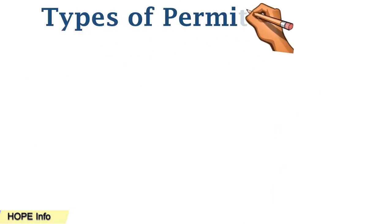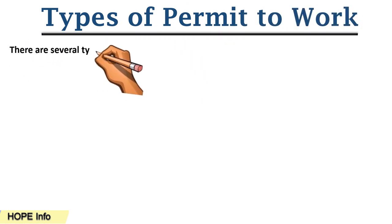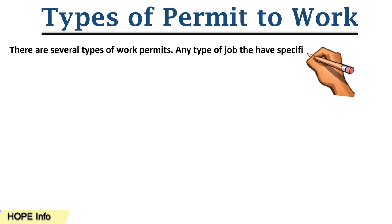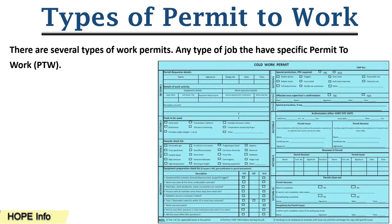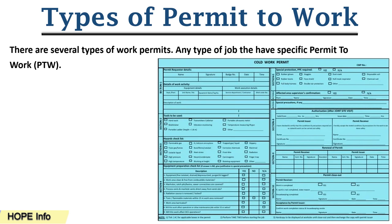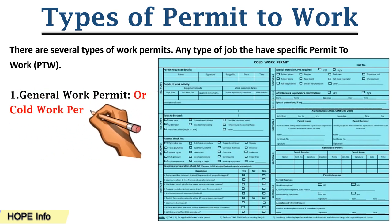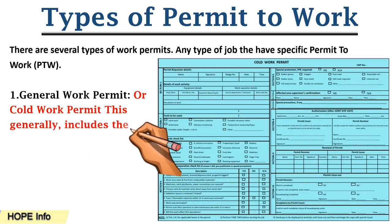We are going to explain seven common types of permit to work. There are several types of permit to work — any type of job has a specific permit to work. Number one is the general work permit, also called a cold permit. This generally includes work in which no heat or spark will be generated.